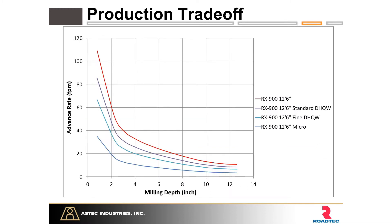This is what production looks like with a standard drum on a full 12-foot-6-inch lane. At two inches with a standard drum, we're around 60 feet per minute. Once you go down to a micro mill drum, you're below 20 feet per minute — a very significant production drop. Our standard five-eighths inch drum is a triple wrap with three scrolls of teeth, while the double hit and micro drums have four scrolls of teeth.